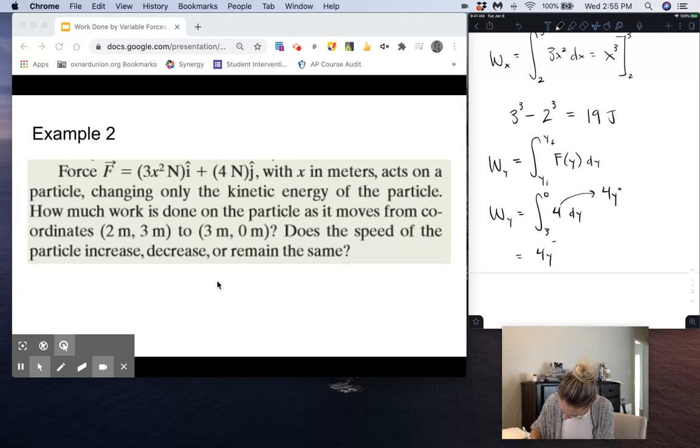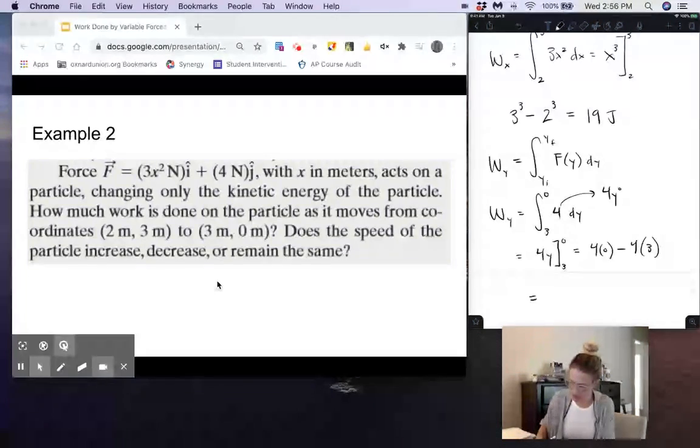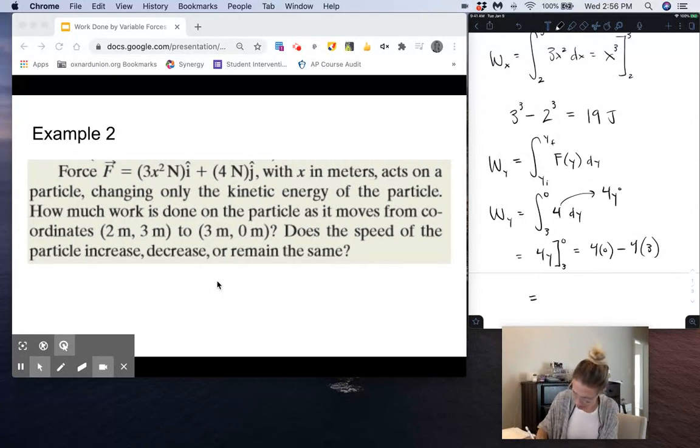We're going to evaluate this from 3 to 0. So final minus initial, we get 4 times 0 minus 4 times 3. That just becomes 0 minus 12, so we get negative 12 joules for that.